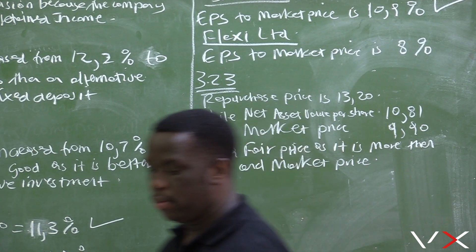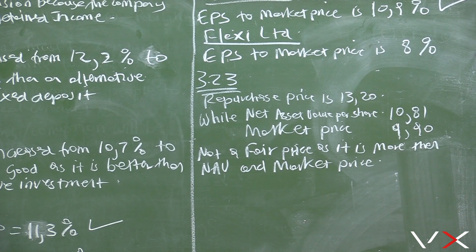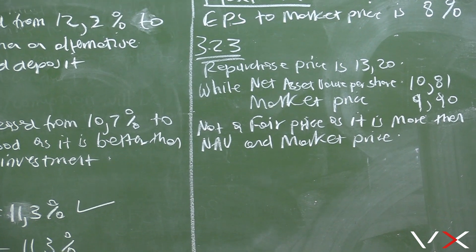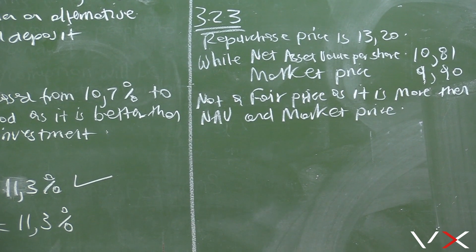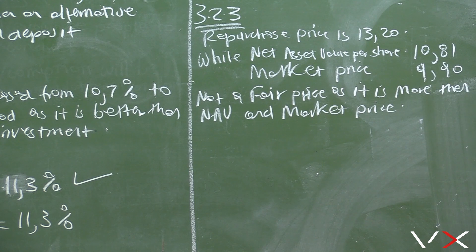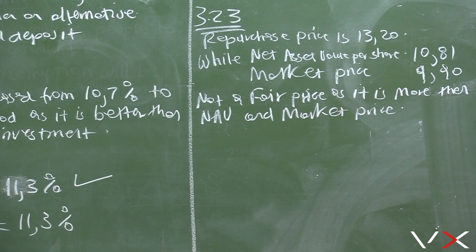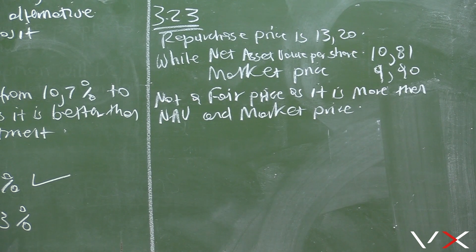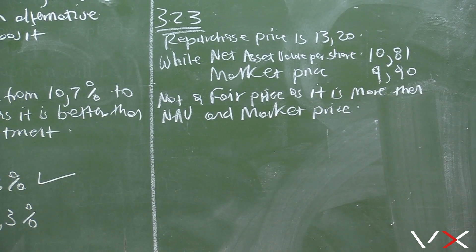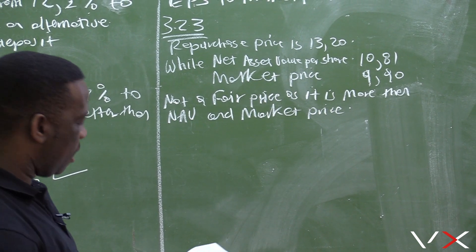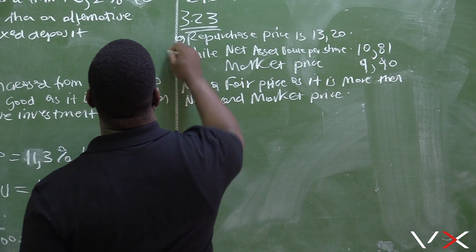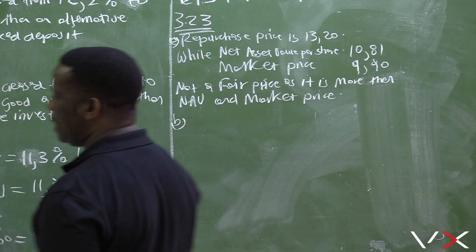This price of R20 charged by the shareholder is not a fair price. The company paid R20, which is more than the net asset value per share of R10.81, and more than the market price. If you could buy these shares in the market, you would only pay R9.90, but the company paid R20. So this is our answer to part A. Let us go to part B.